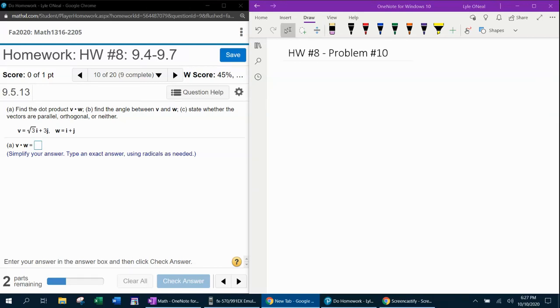Alright, here we go. Question number 10 from our 1316 homework number 8 in MyLabMath. Part A: find the dot product V dot W, and then find the angle between V and W. State whether the vectors are parallel, perpendicular, or neither.